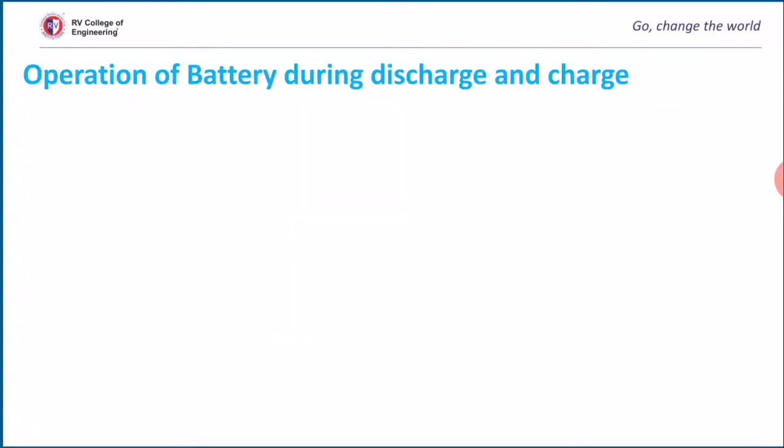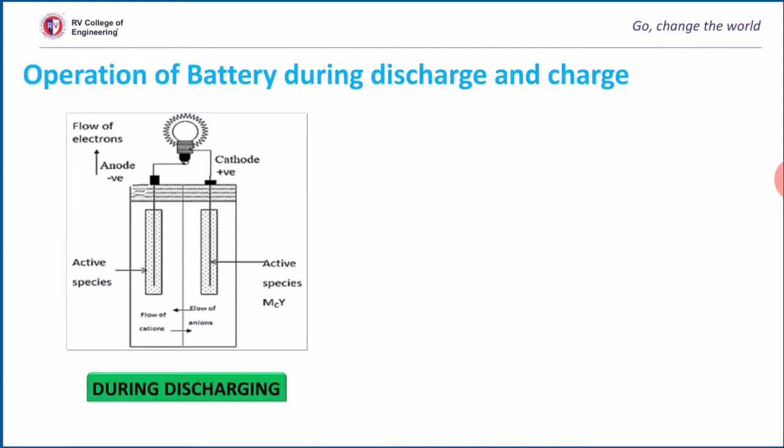Now we will discuss the operation of a battery. It consists of two parts: discharging and charging, applicable for secondary batteries. During discharging, when the anode and cathode of a battery are connected to a load, a redox reaction occurs spontaneously.